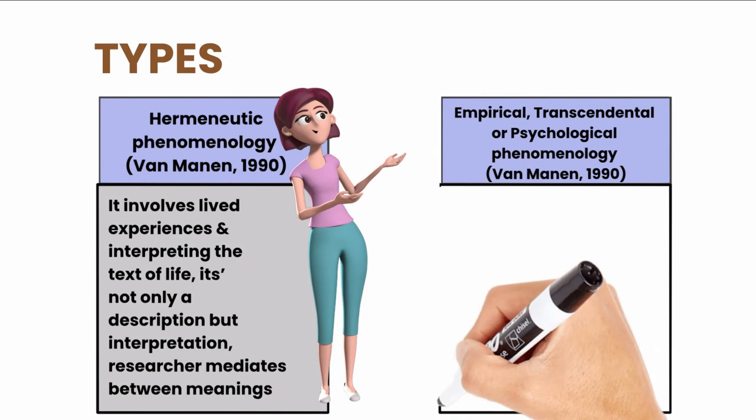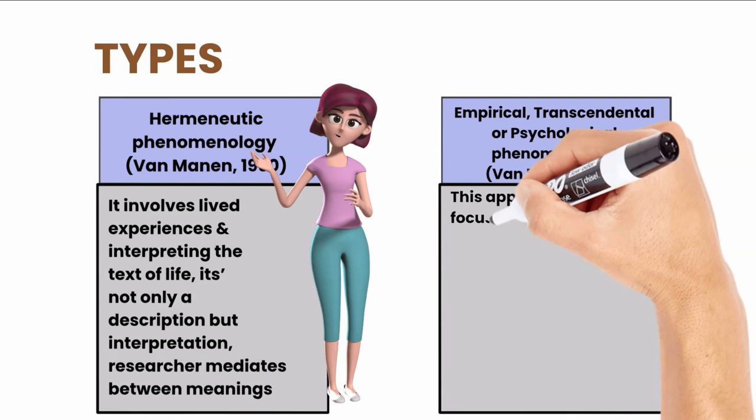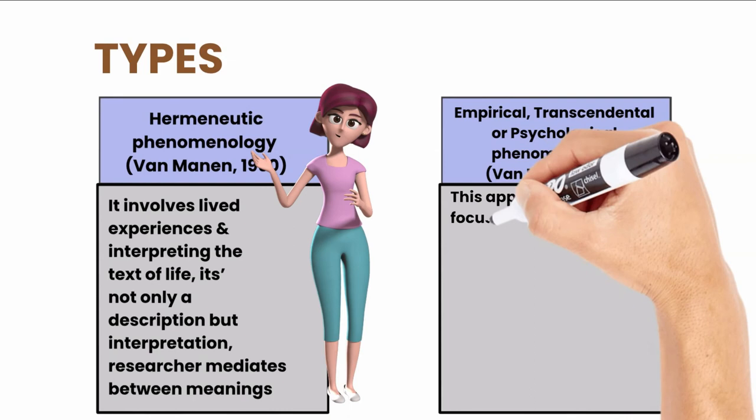Empirical, transcendental, or psychological phenomenology is less focused on interpretations and more on description of experiences of participants. Fresh experiences of participants. And here, researcher develops a textural description of phenomenon. Thank you.